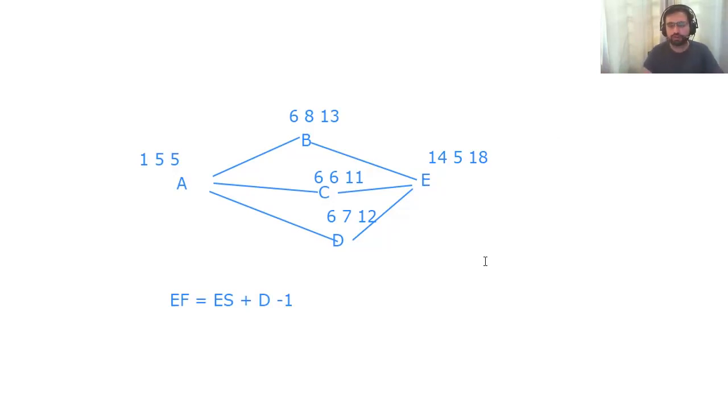But if you want to follow the complete thing or they are asking you for float, so then you have to do backward pass. For backward pass, always remember that late finish of last activity, here in this case is E, late finish is equal to early finish. So we will have here late finish 18. Duration remains the same, 5, 14. And the formula for late start is late start is equal to late finish minus duration plus one.